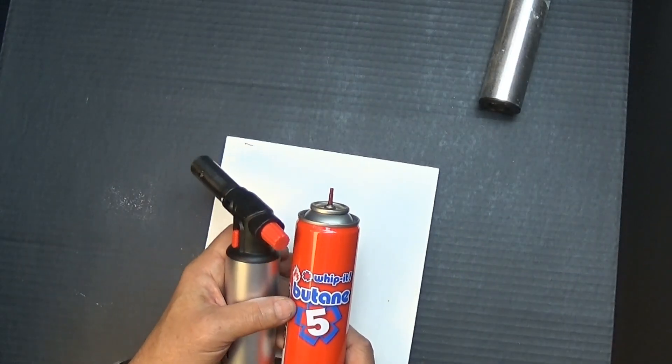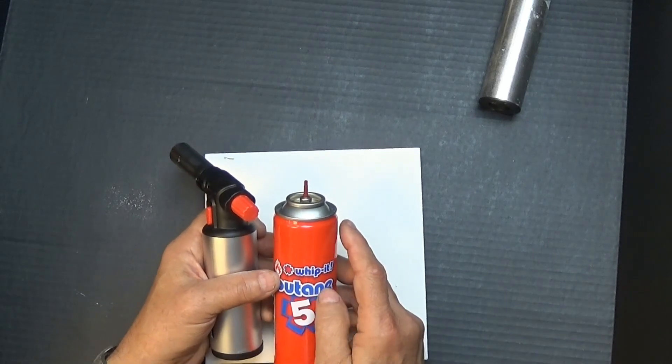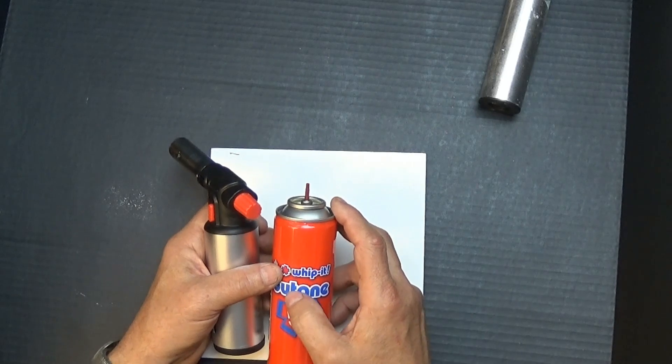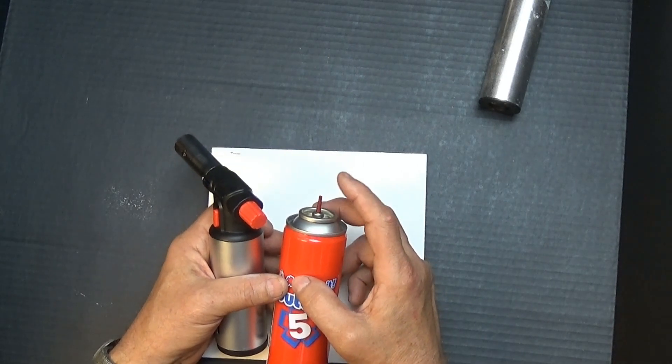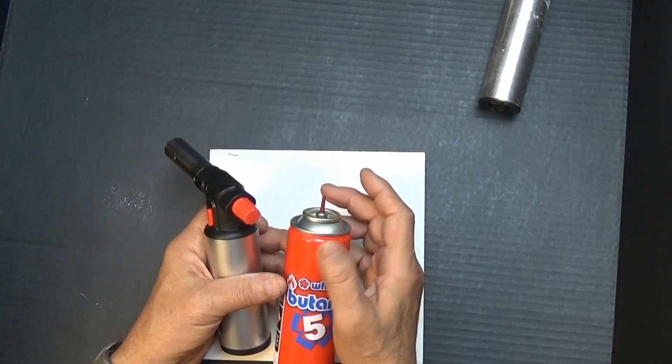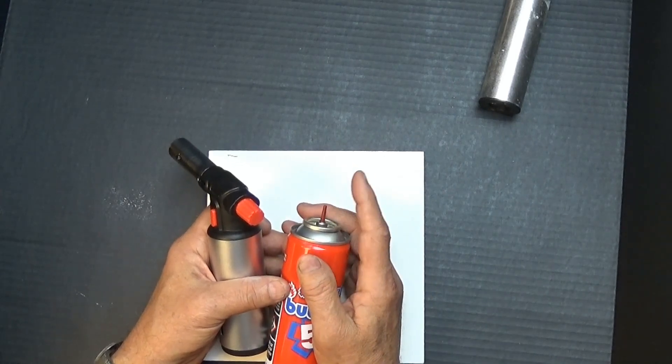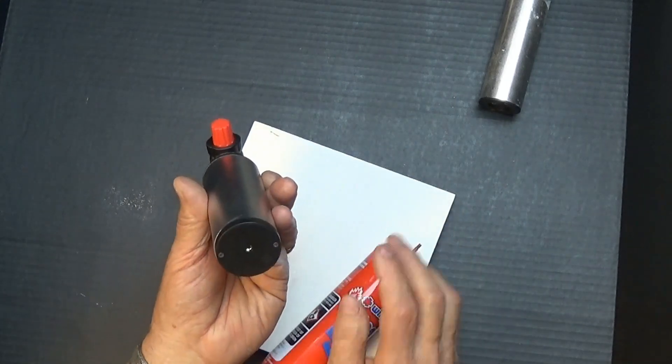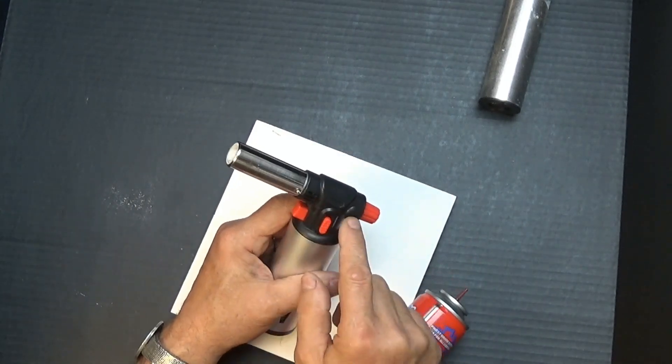When you buy your butane, you want to buy some really highly filtered butane, five times, ten times, two times, whatever. As long as it's filtered or refined, you should be good. Sometimes they come with a steel end and a plastic cap that has a lot of little nozzles in it. You don't want to use those little nozzles because they chip off. And when they chip off and get into your torch, they plug it up and keep it from working.